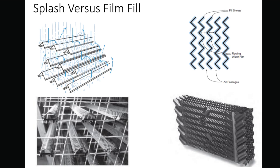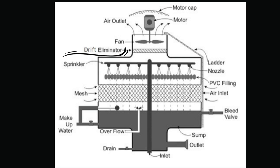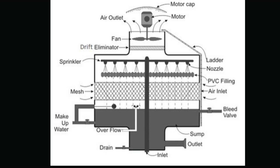Cold water basin: located at or near the bottom of the tower, it receives the cooled water that flows down through the tower and fill. The basin usually has a low point for the cold water discharge connection, and in many tower designs the cold water basin is beneath the entire fill. Drift eliminators capture water droplets entrapped in the air stream that otherwise would be lost to the atmosphere. The air inlet is the point of entry for air entering a tower; the inlet may take up an entire side in a cross-flow design, or be located low on the side or bottom in counter-flow designs.